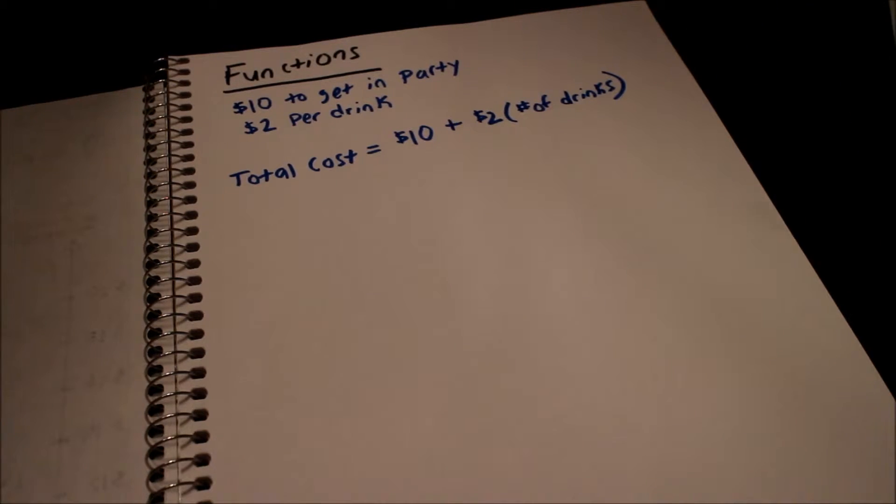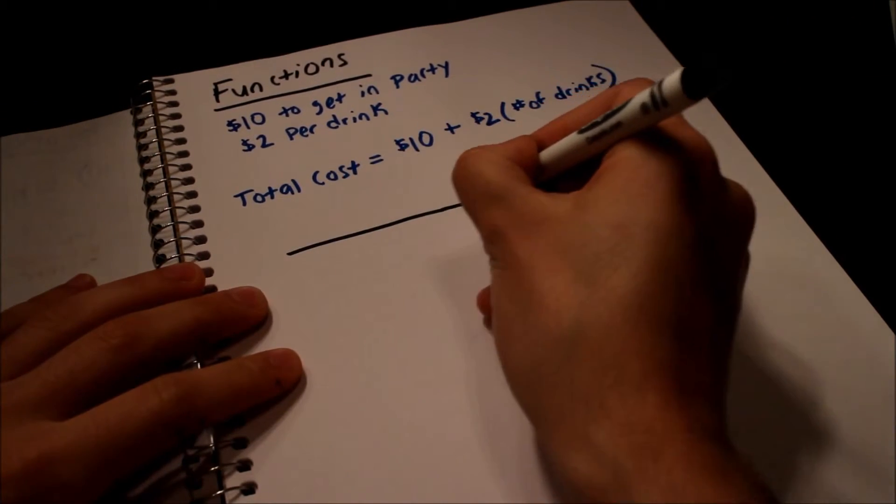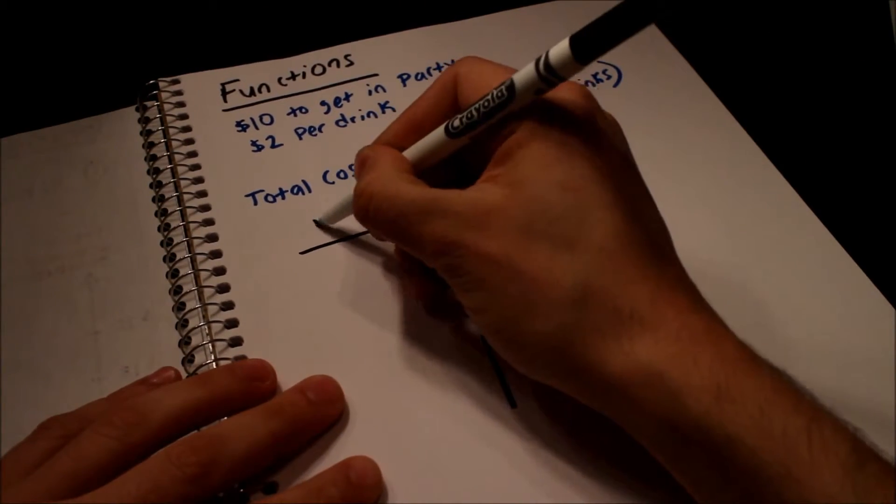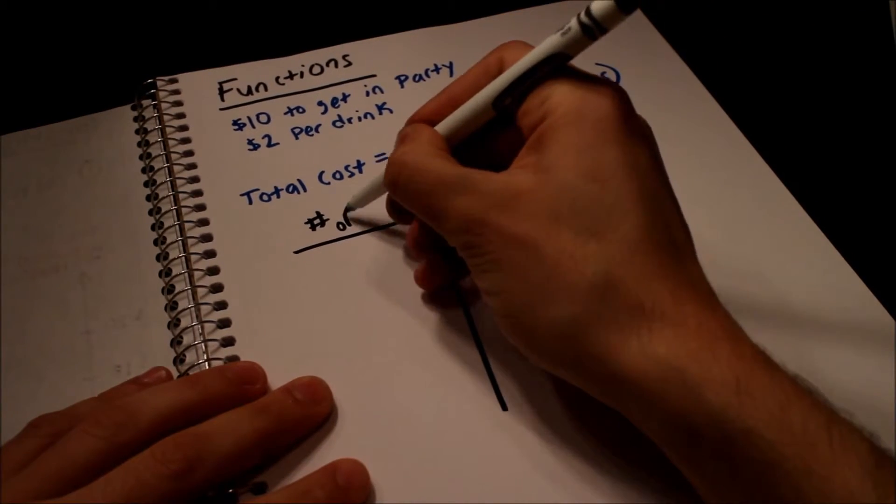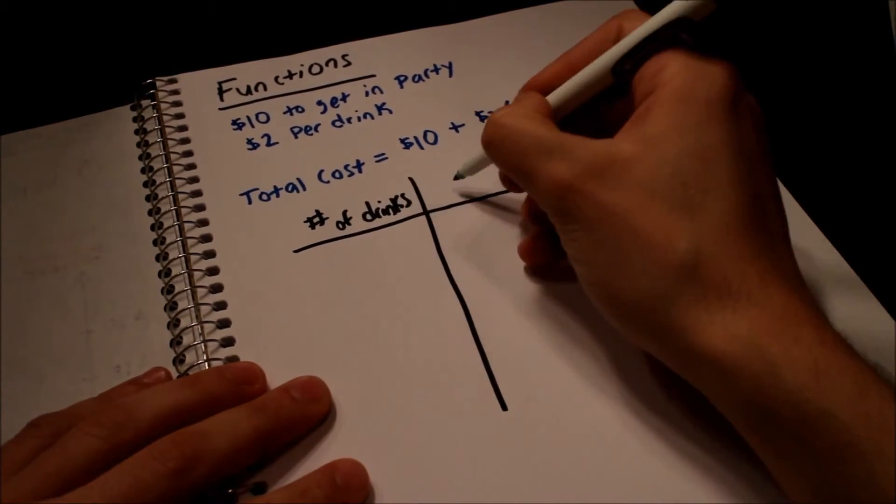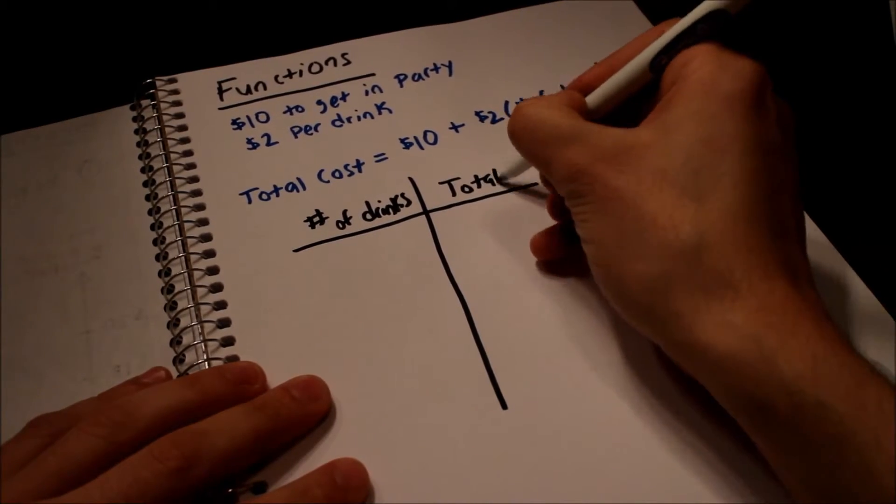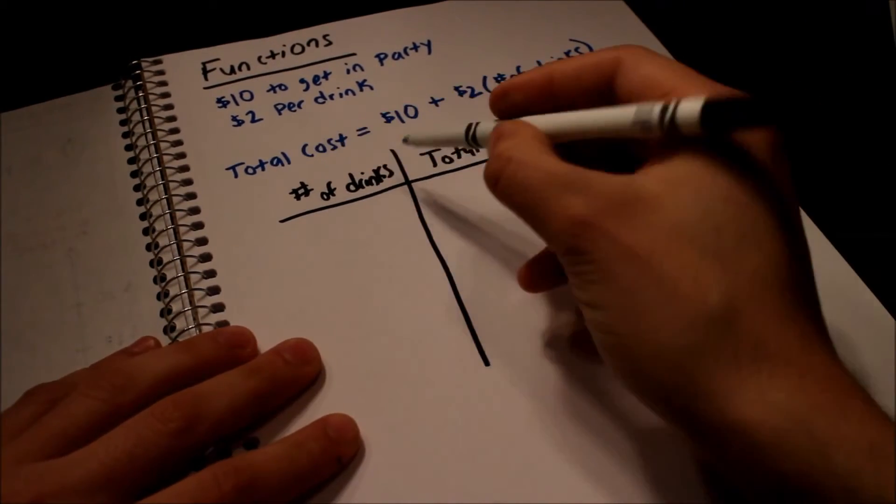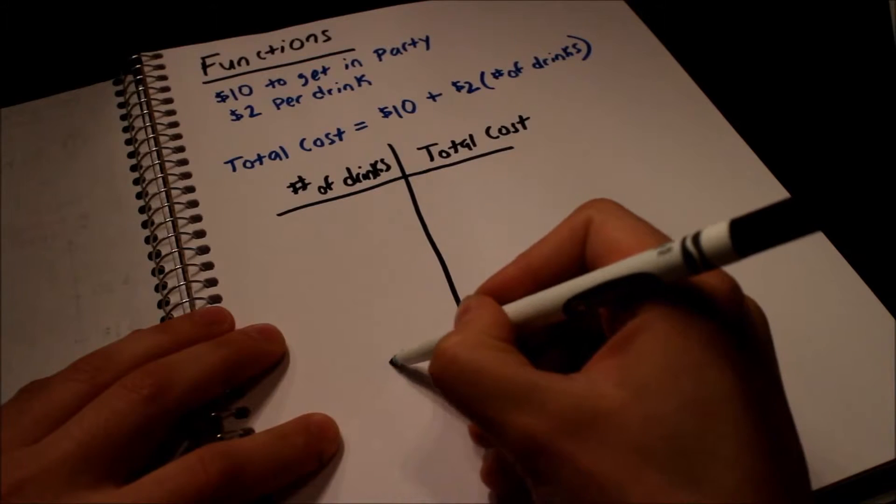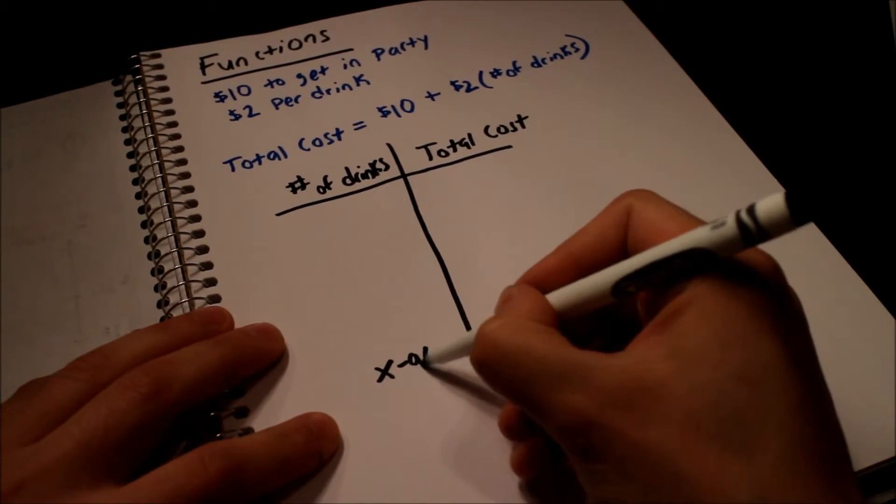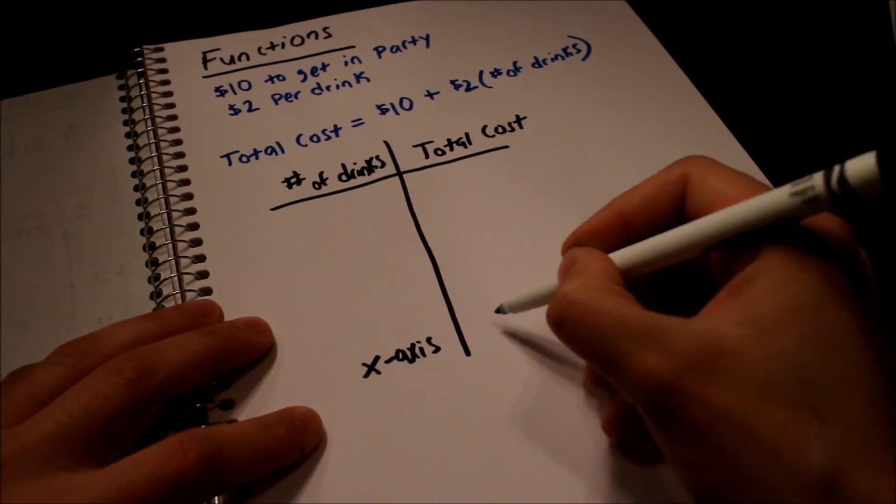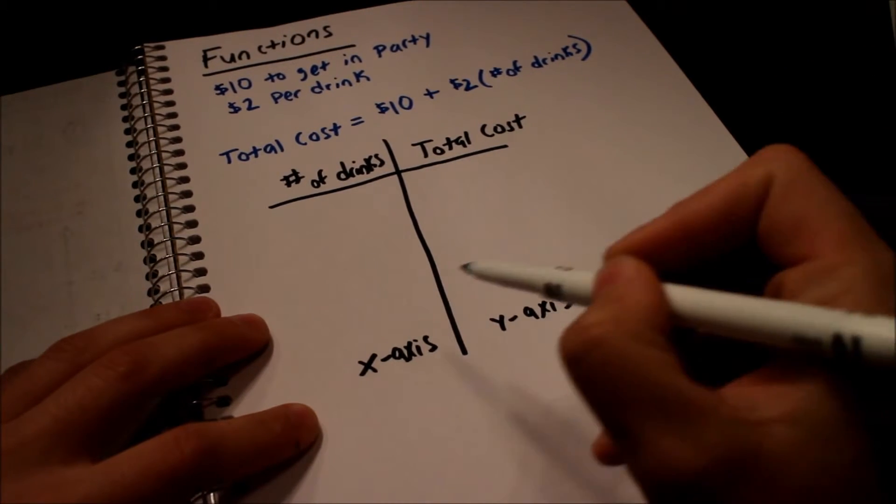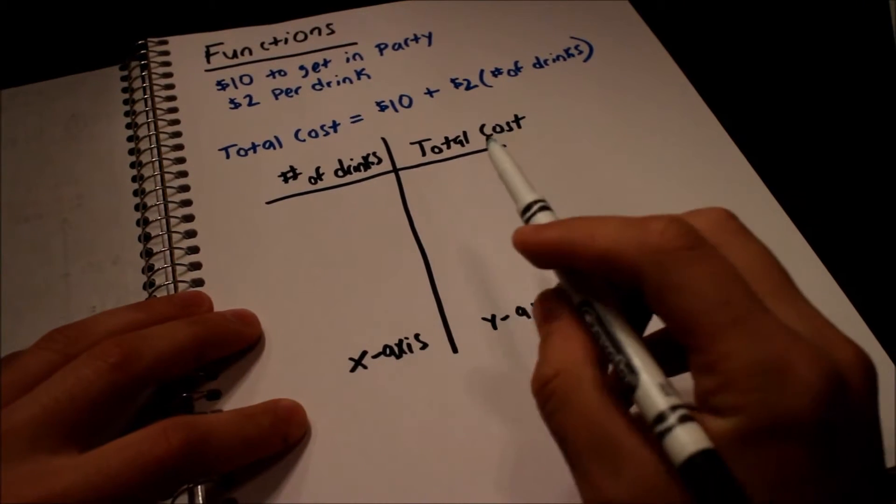So we can make a quick table of values here. And you'll see it's already plotted. That's what I plotted on the other page. So let's see: number of drinks and total cost. The number of drinks - I don't have room here. This is going to be like our x-axis right here. And the total cost, this is going to be like our y-axis. So the total cost depends on the number of drinks that we have.